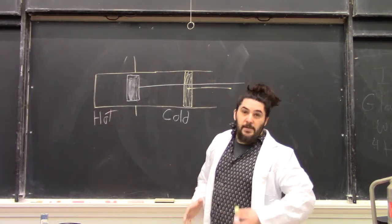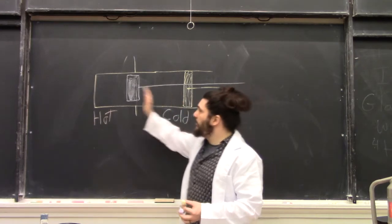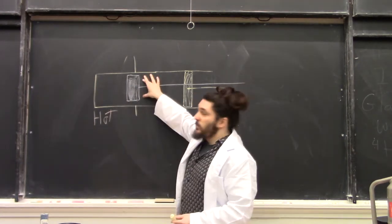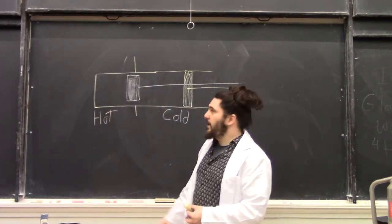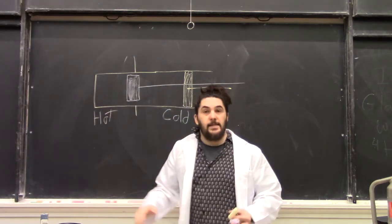This piston at the back is called the power piston. It controls the overall volume of gas in the cylinder. This one is called the displacer piston. It controls where in the cylinder the gas is.